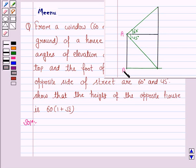Let CE be the other house. So A is the window at a height of 60 meters, and CE is the other house.